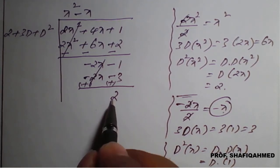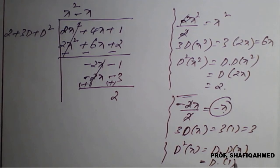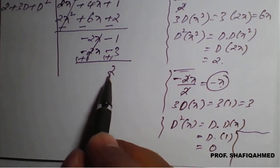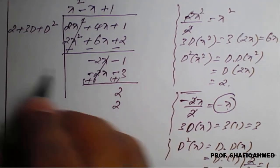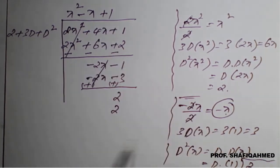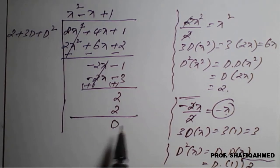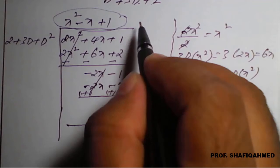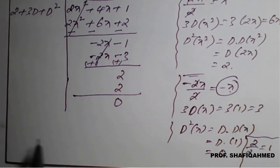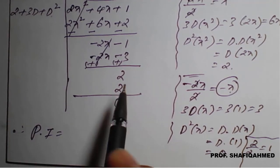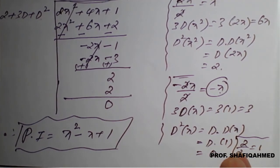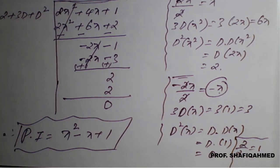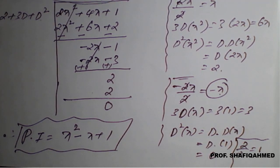2 divided by 2 — first term divided by first term — equals 1. Write +1 in the quotient. Then 2 × 1 = 2; 3 times differentiation of 1 is 0; double differentiation of 1 is also 0. So the remainder is 0. Therefore, the quotient we obtained is the particular integral. PI of the given equation is x² − x + 1. This is the method to find a particular integral of type 3, which is a polynomial divided by f(D). We will now see actual examples based on this type 3.